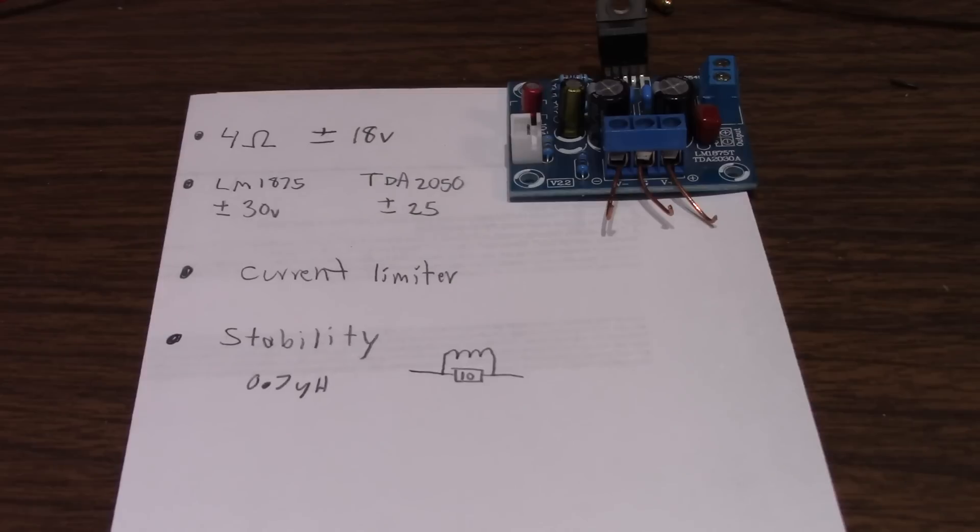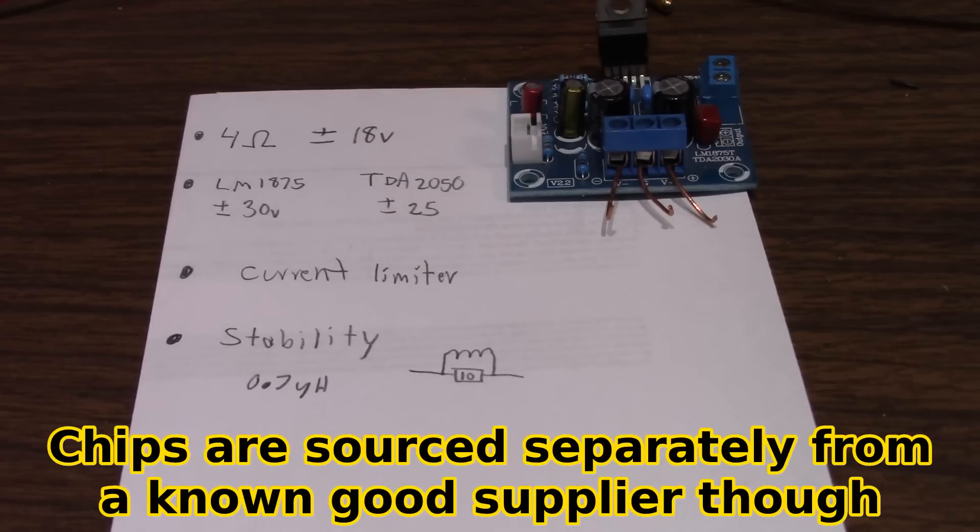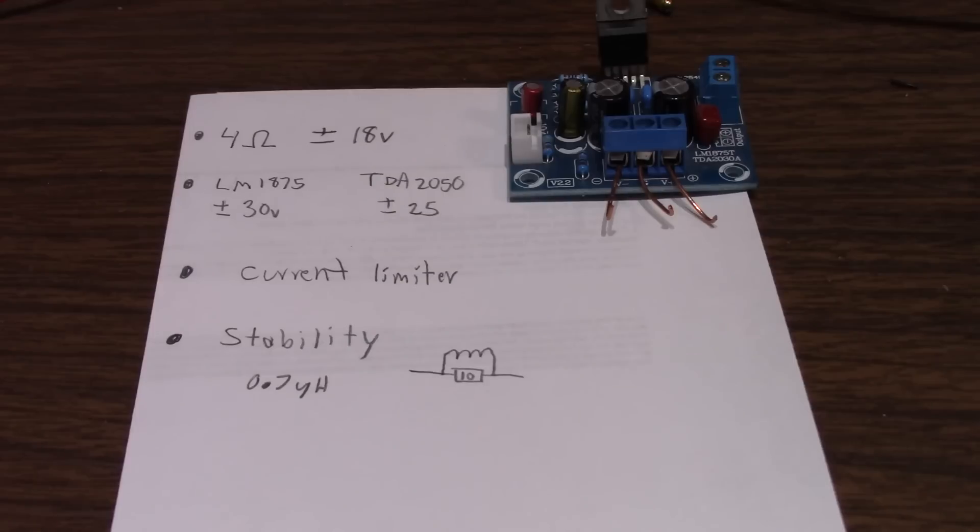I bought from Mouser or Digikey. These came in the kit. I did test them with my little component tester to make sure the capacitance and ESR was good and the resistor values were correct and all that stuff. Everything checked out good, so I used it. So as we just saw, the distortion performance and power with the TDA2050 was much better than the LM1875.